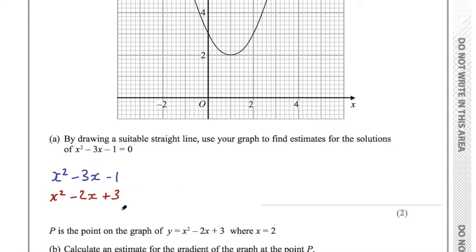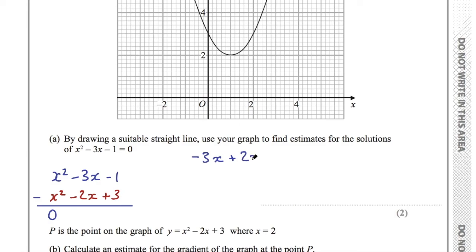I can say that the first equation plus the difference equals the second equation. If I subtract these two equations: x squared minus x squared is 0; minus 3x minus minus 2x gives minus 3x plus 2x, which equals minus x; then minus 1 minus 3 gives minus 4.